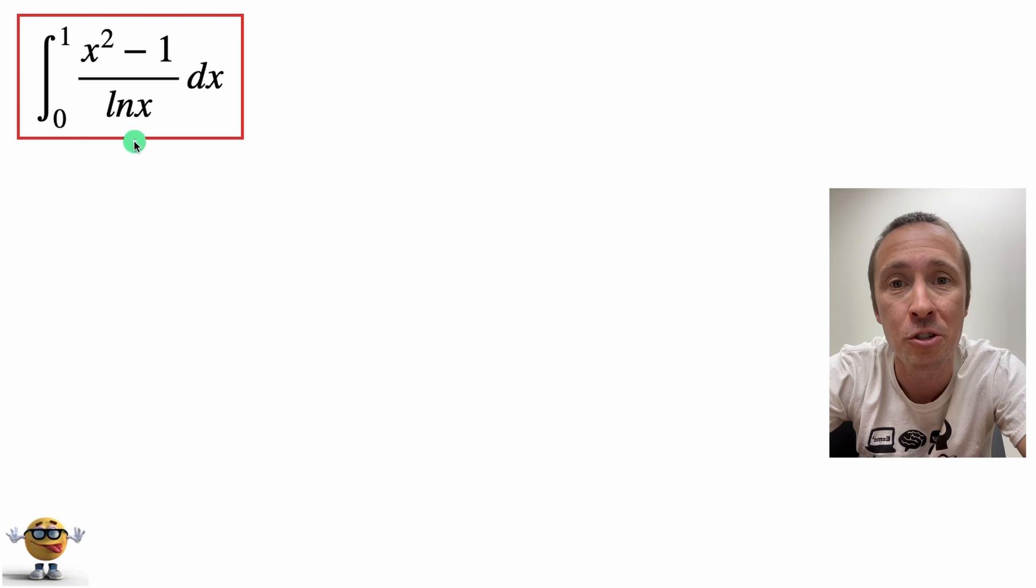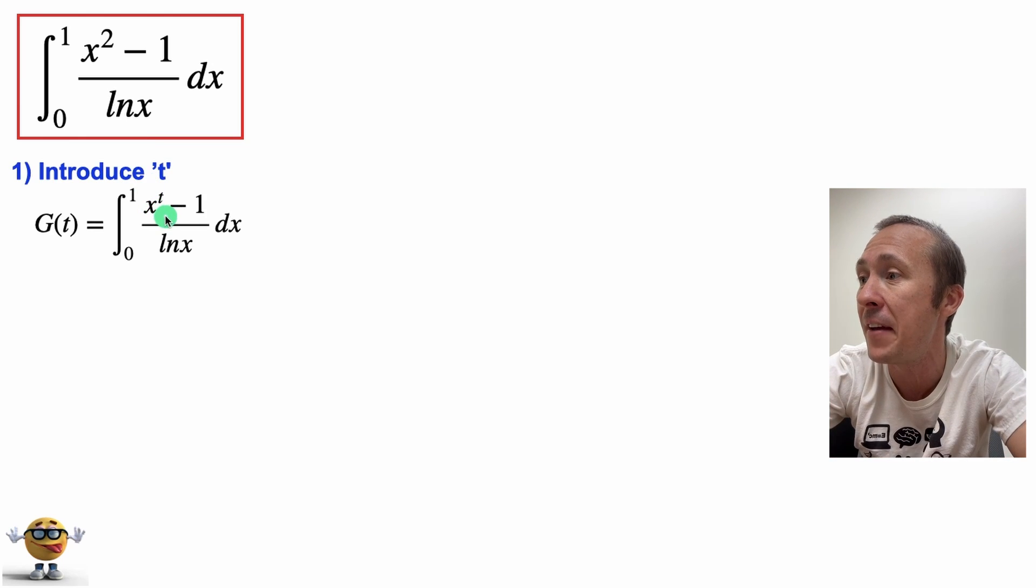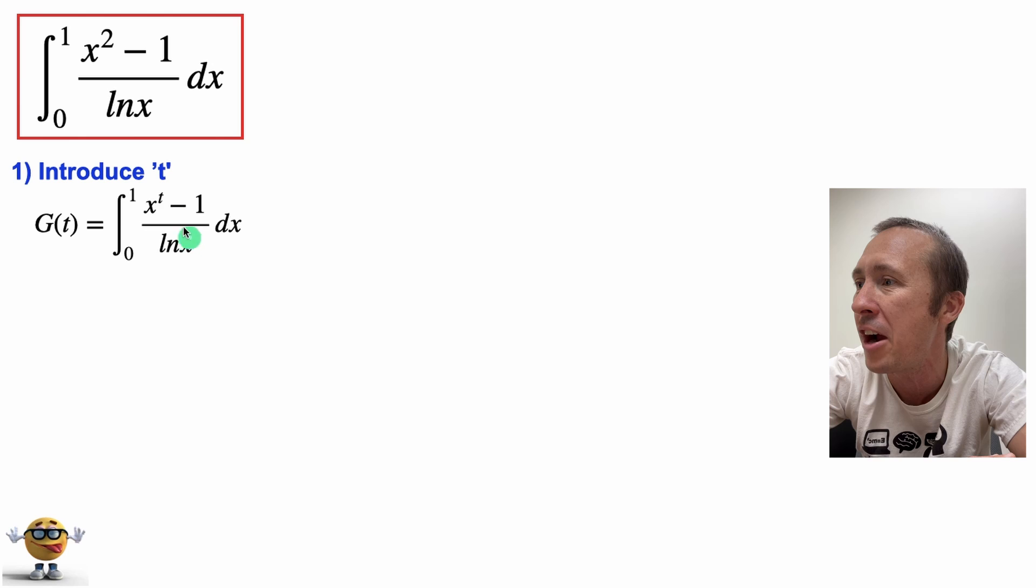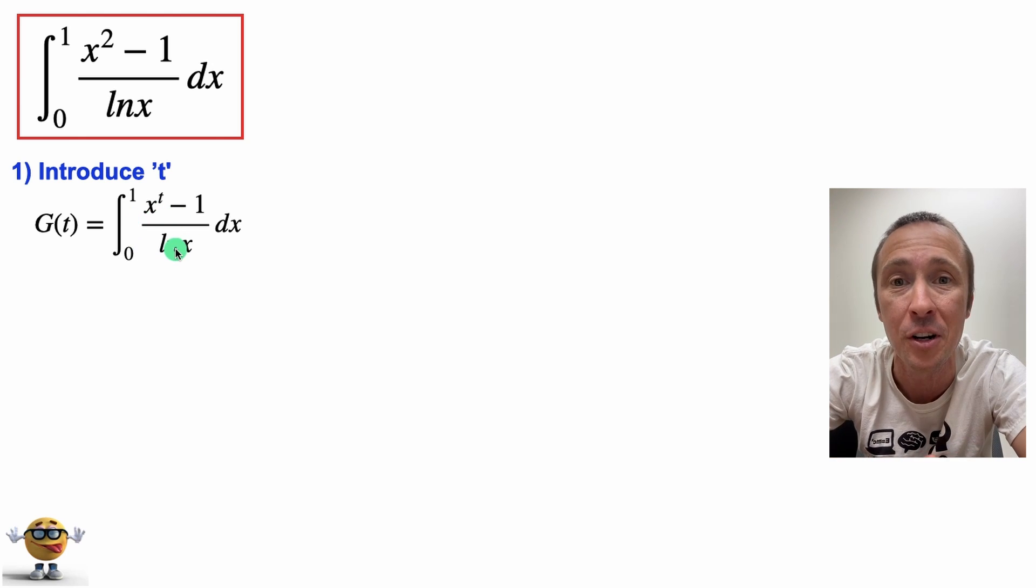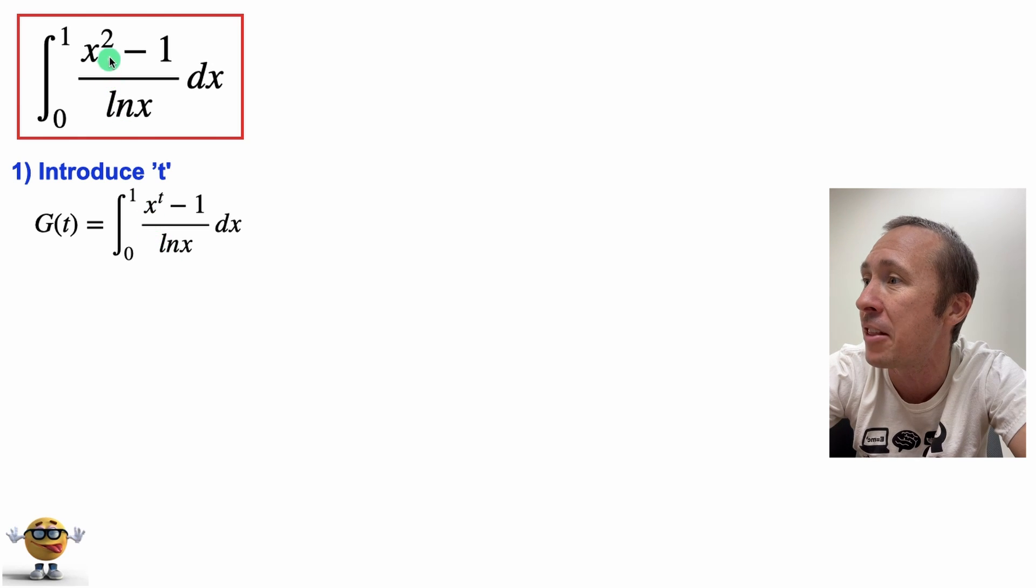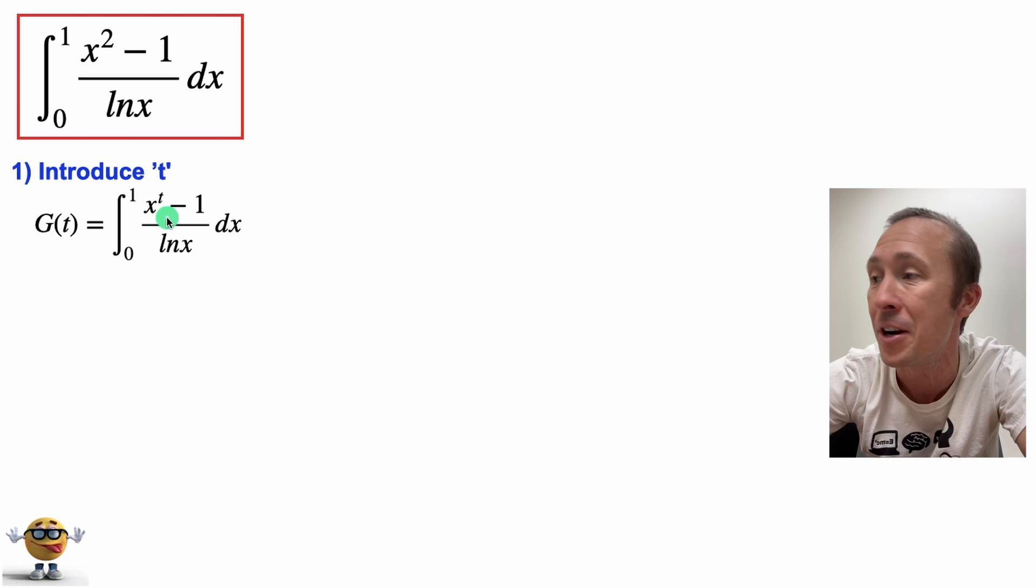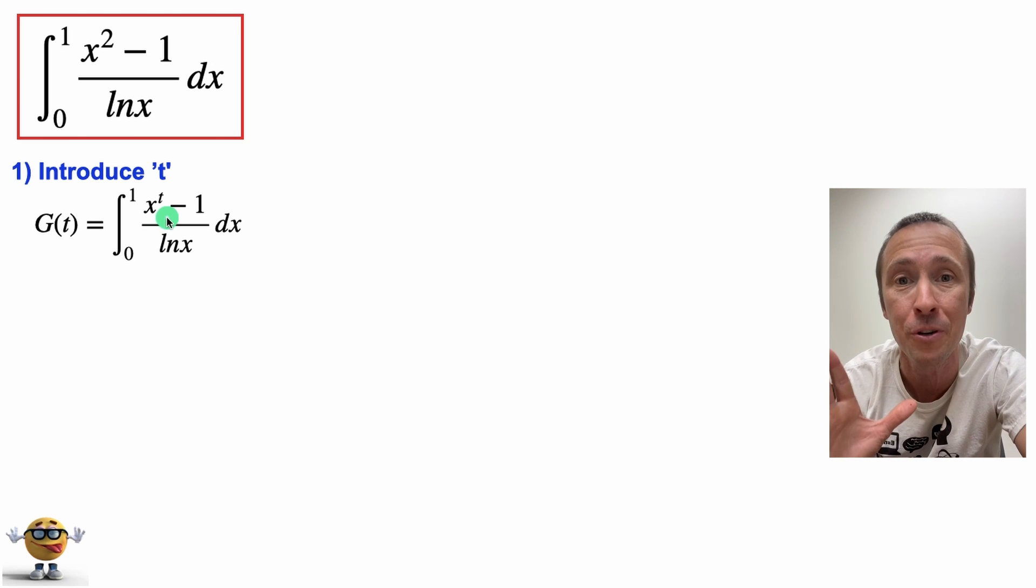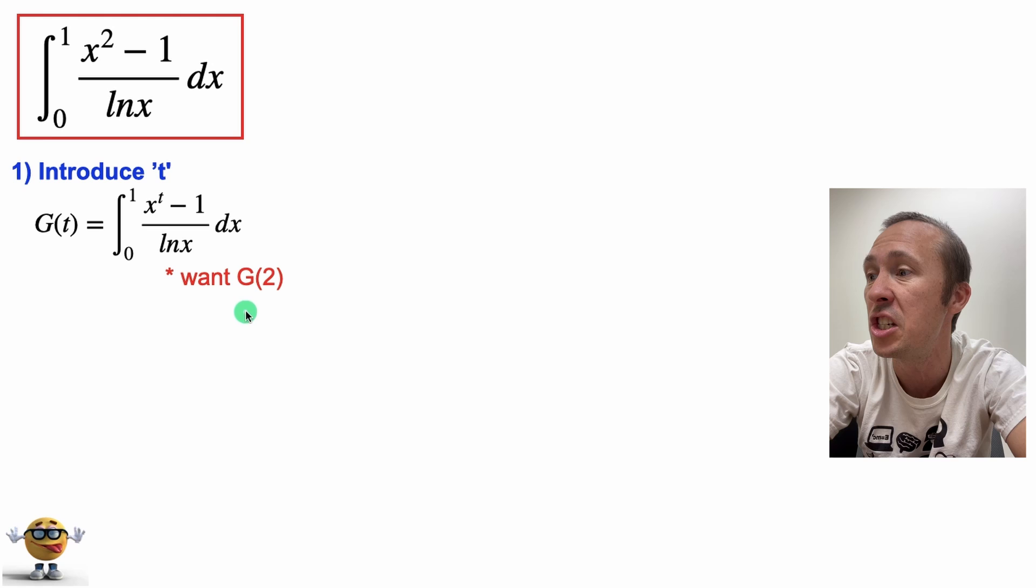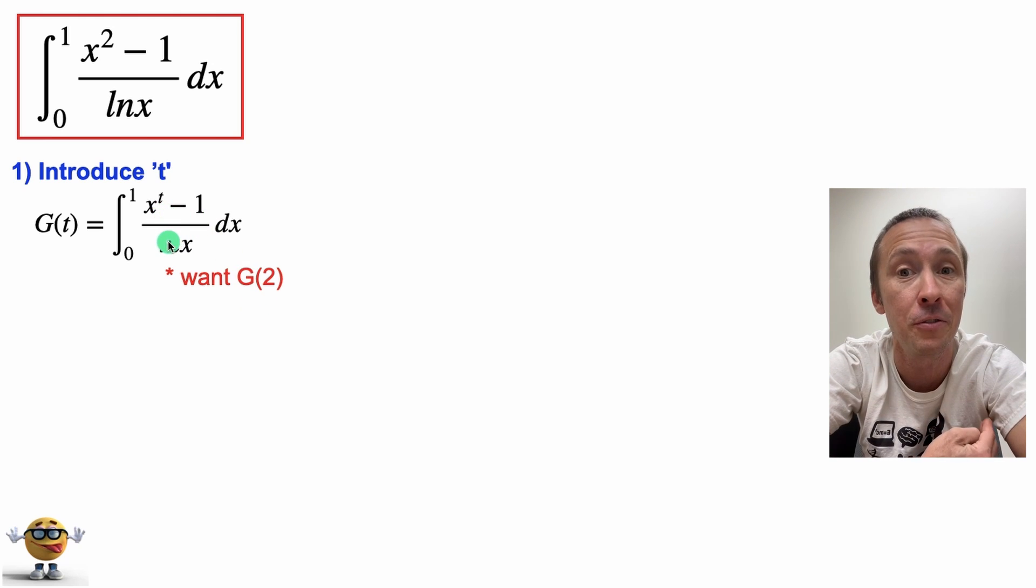The first part of the trick is to introduce a parameter, some variable, and we're going to call it t. We're going to insert it in here, and this is one of the trickiest parts: where do you introduce the parameter? Here, rather than having a 2, I call 2 a t where t can be any real number. Bear with me as we go through it—you'll see why we did this. With the t here, what we want is g of 2 because t is 2, and that's our integral right here.